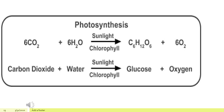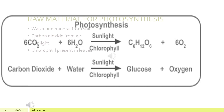You can see that carbon dioxide combines with water in the presence of sunlight and chlorophyll to form carbohydrate and oxygen. The raw materials for photosynthesis are water and minerals from the soil, carbon dioxide from the air, and sunlight and chlorophyll present in the leaves.